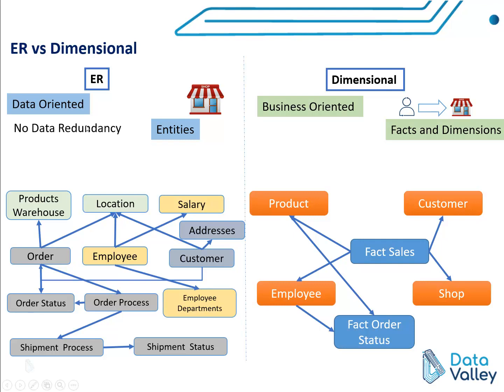In ER modeling there is no redundancy — no duplication of data. Information is not repeated in other entities; it has only one place. For example, employee department information is not repeated in any other entity. Each piece of information exists in one entity only and is not replicated to other entities.